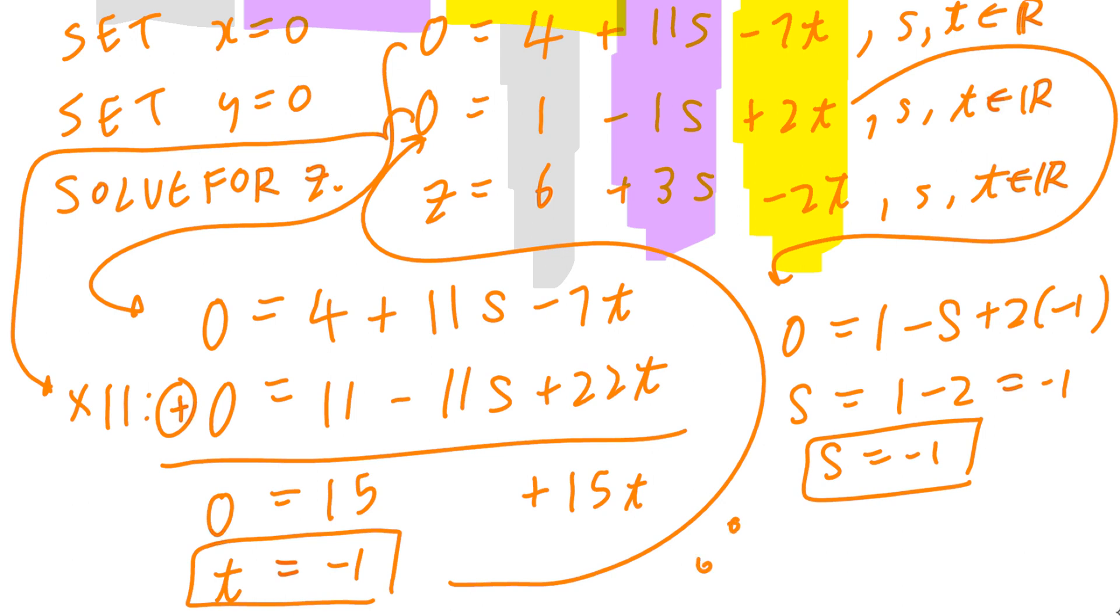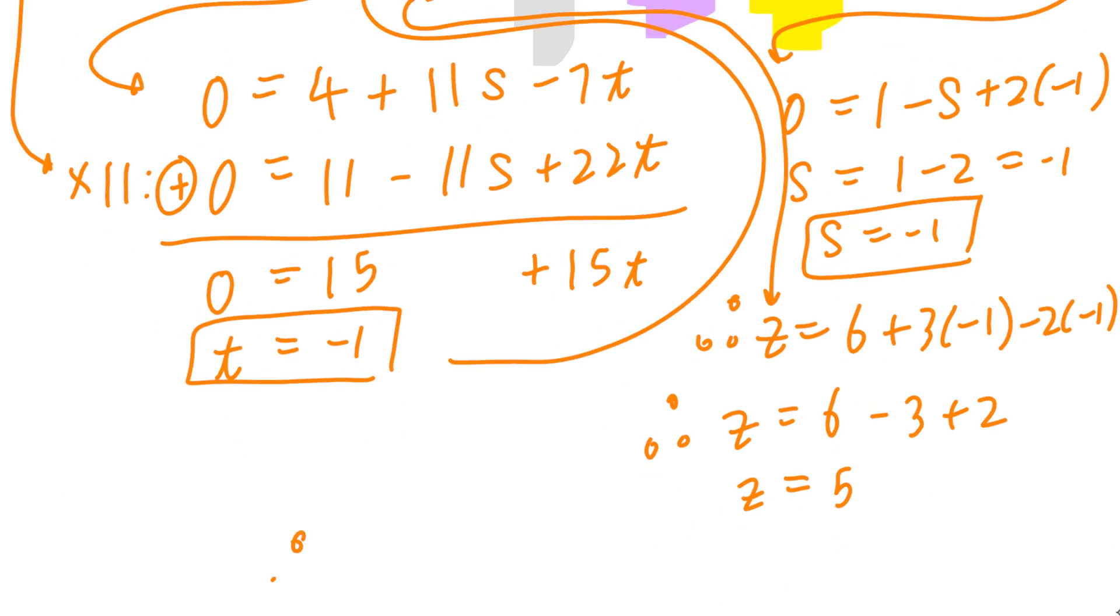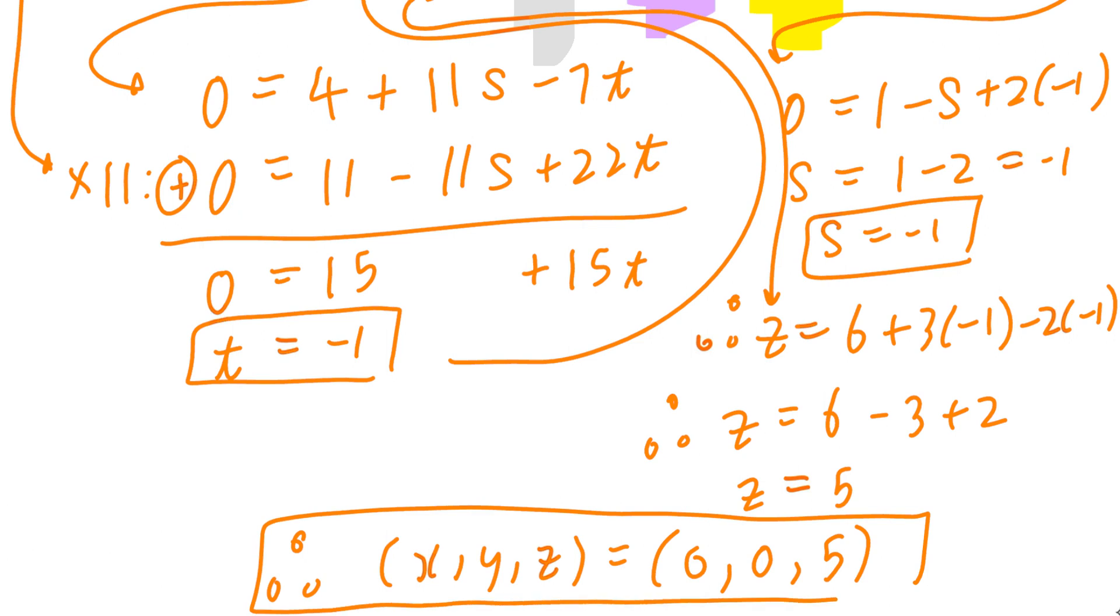Now, I can say z, which comes from here. 6 plus 3 times negative 1 minus 2 times negative 1. That's going to be 6 minus 3 plus 2, which is 3 plus 2, that's 5. 5 is not the answer. The final answer is, remember, x and y are 0 and z is 5. So the final answer is (0, 0, 5). I hope this makes sense.